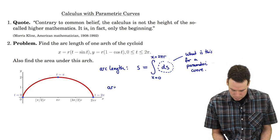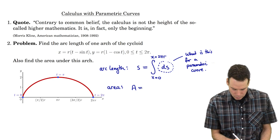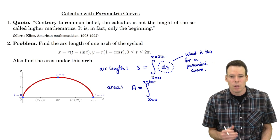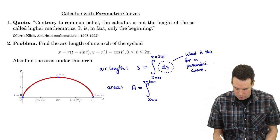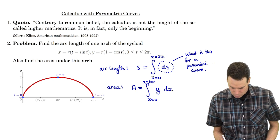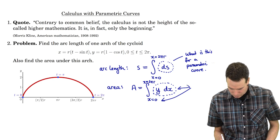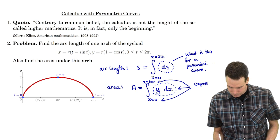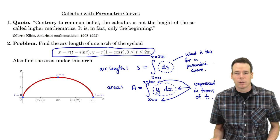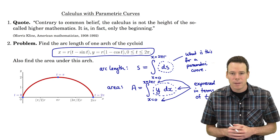For area, the area under this curve — between the curve and the axes — is the integral from x equals 0 to x equals 2πr of the y values with respect to x. Now for this curve everything is in terms of t, so we'd have to express the y, the dx, and the limits of integration in terms of our parameter t. That's what we're going to focus on first.